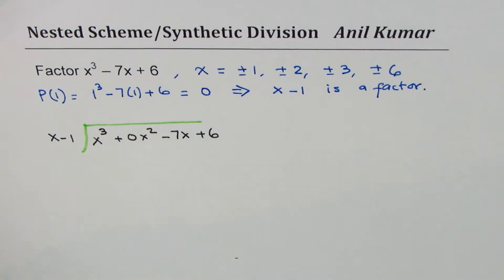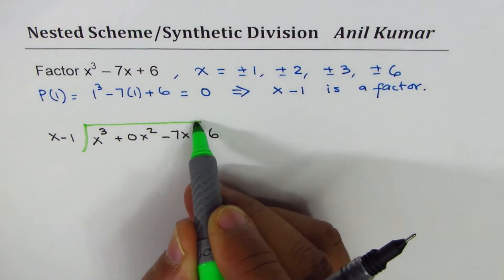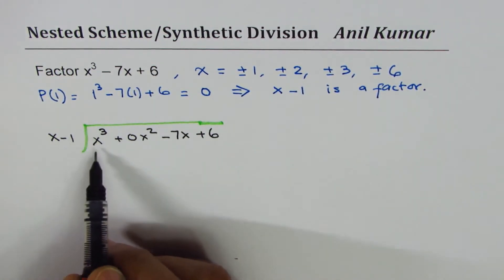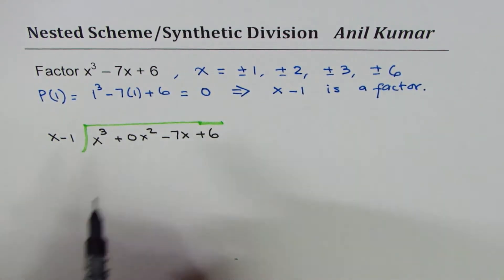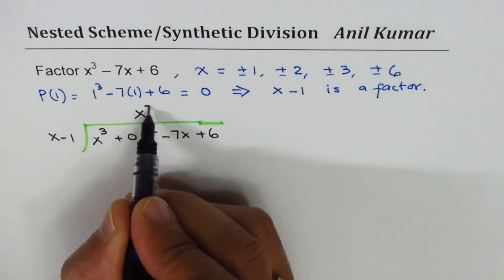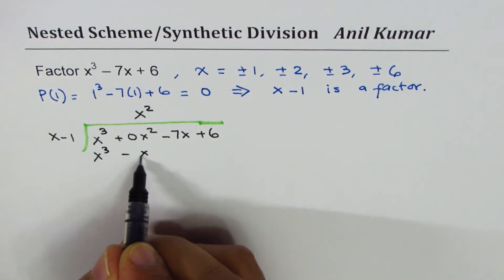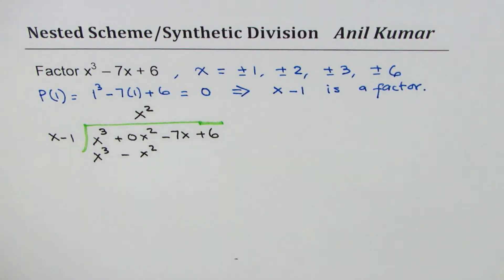The long division is kind of similar to what you've already learned. We take care of the first leading coefficient. Now here it is x cube with 1, so we'll multiply it by x square that gives you x cube minus x square.